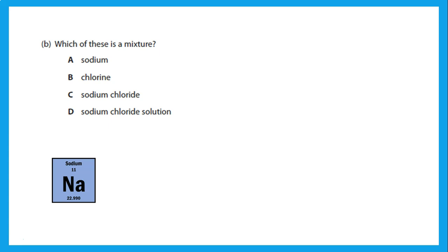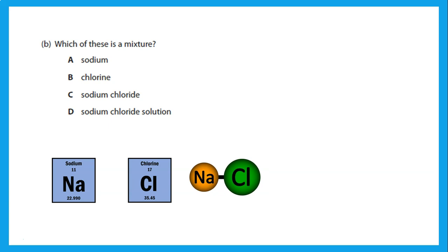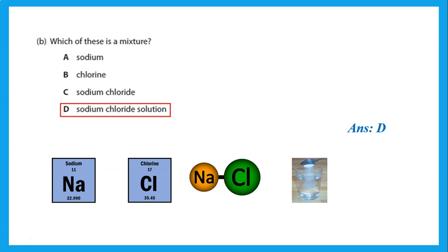Which of these is a mixture? Sodium alone is an element — anything in the periodic table is an element. Chlorine is an element where all atoms are chlorine. Sodium chloride is made up of sodium atoms chemically combined with chlorine atoms, so sodium chloride is a compound. But sodium chloride solution means dissolving salt in water, and salt dissolved in water is a mixture.